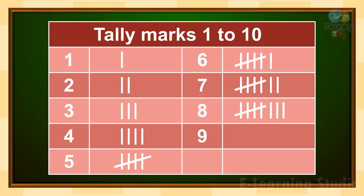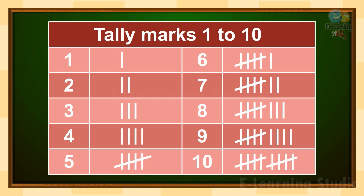Similarly, for 9, we will draw 4 vertical lines and then cut it with a slanting line for 5, then draw 4 more vertical lines: 1, 2, 3, 4. And for 10, make a group of 5 two times. I hope you understood this.